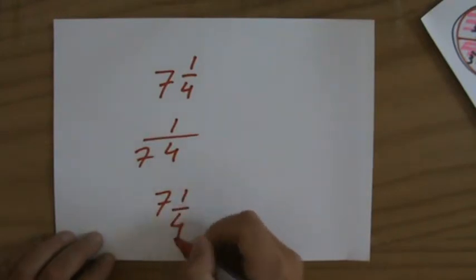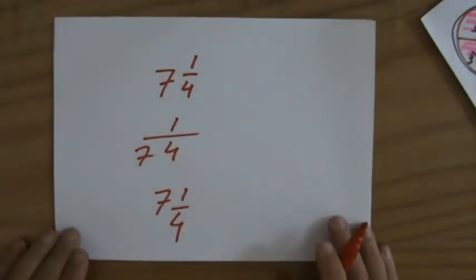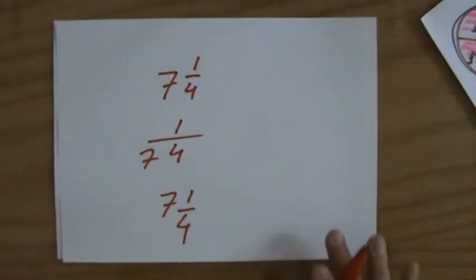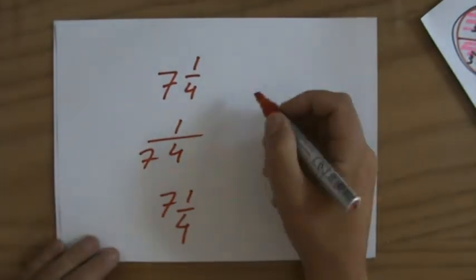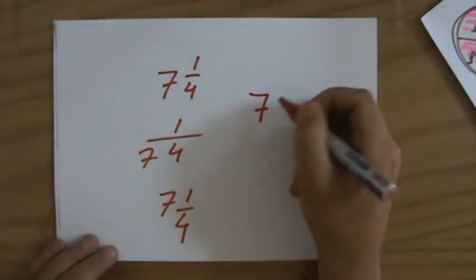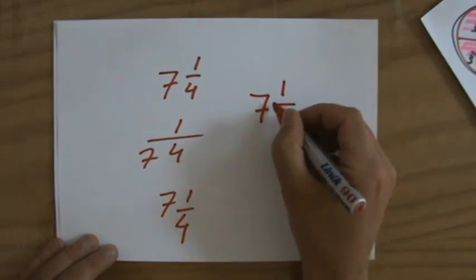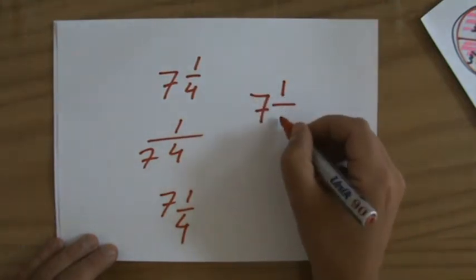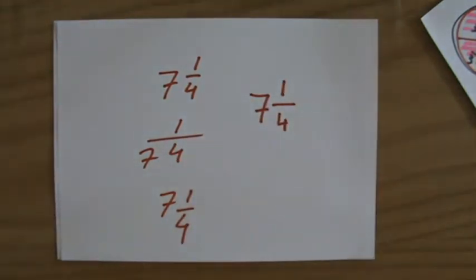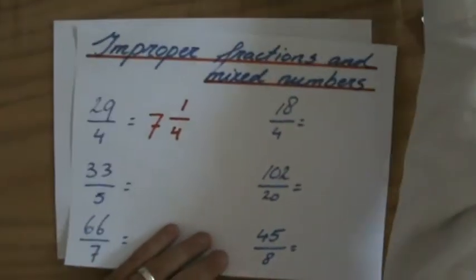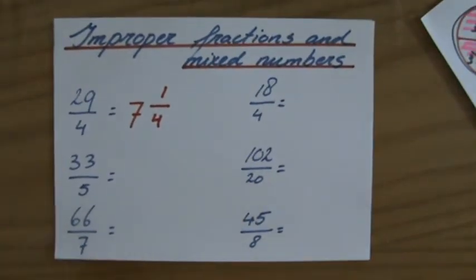If you write 7, 1 over 4 incorrectly, it looks like 71 over 4—again, a top-heavy fraction. So for a mixed number, you write the whole, then the fraction, with the division sign roughly in the middle of that whole number. So 7, 1 over 4. Now it's clearly a mixed number. That was just a side note. Let's continue.